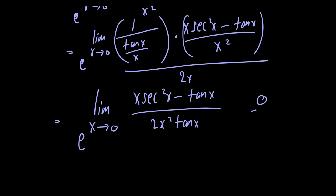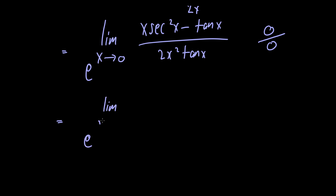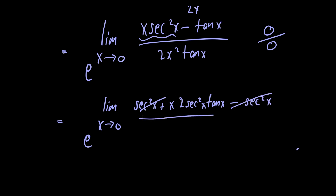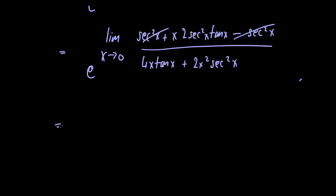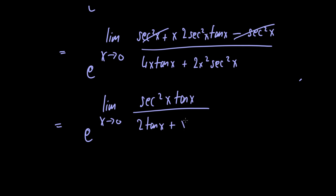This limit is again of indeterminate form 0 over 0, so we apply L'Hôpital's rule a second time. Taking the derivative of the numerator using the product rule gives secant squared of x plus x times 2 secant squared of x times tangent of x, minus secant squared of x — the last two terms cancel. For the denominator we use the product rule to get 4x times tangent of x plus 2x squared times secant squared of x. After cancelling a factor of 2 and a factor of x, we're left with e raised to the limit as x approaches 0 of secant squared of x times tangent of x, divided by 2 times tangent of x plus x times secant squared of x.